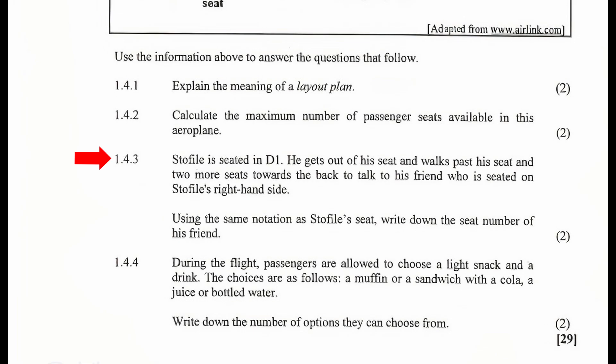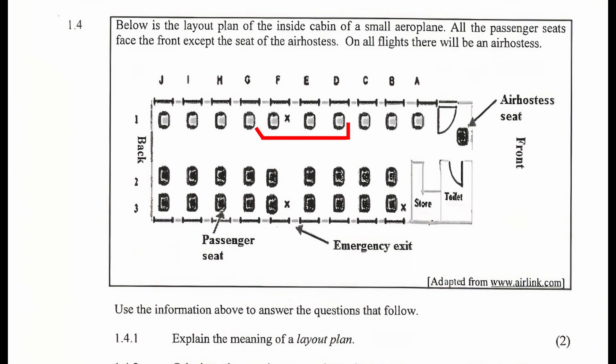1.4.3: Stofile is seated in D1. He gets out of his seat and walks past his seat and two more seats towards the back to talk to his friend who is seated on Stofile's right hand side. Using the same notation as Stofile's seat, write down the seat number of his friend. From the layout plan, the seat number of his friend is G1.